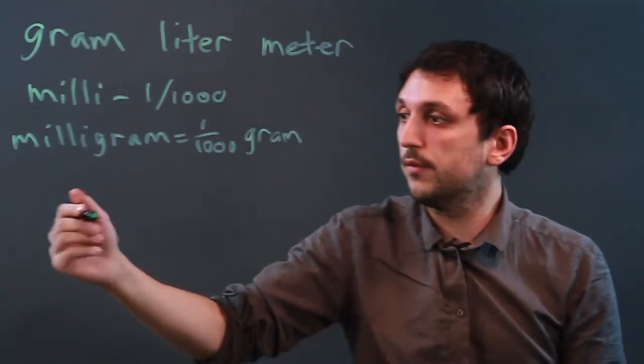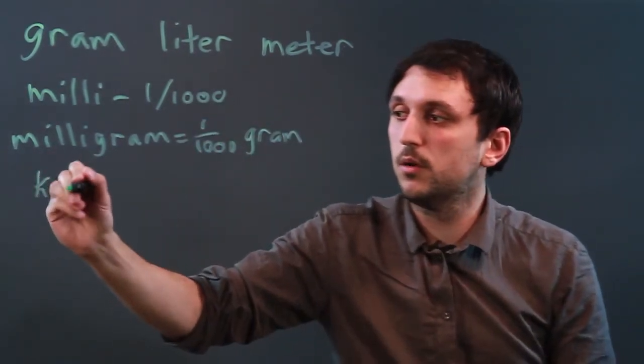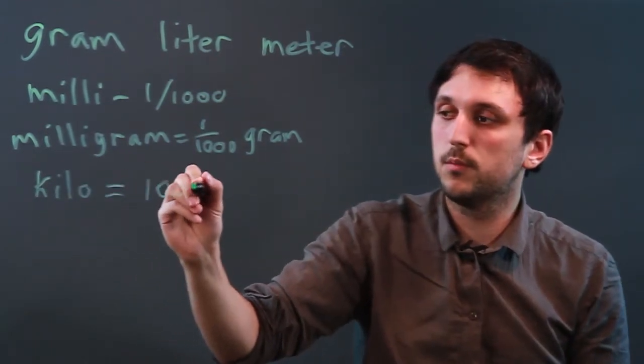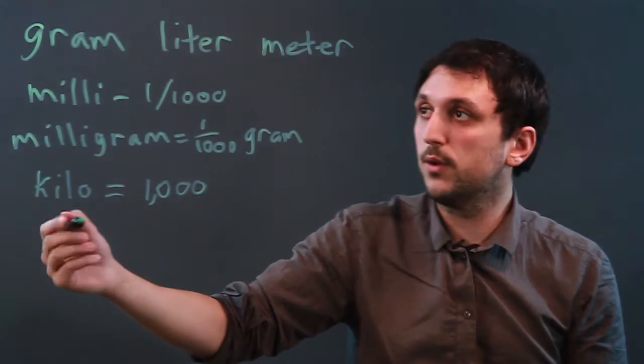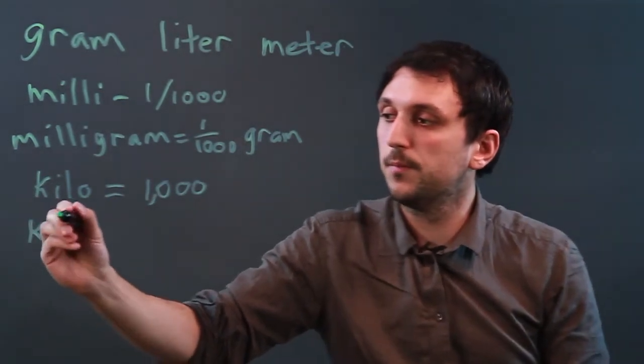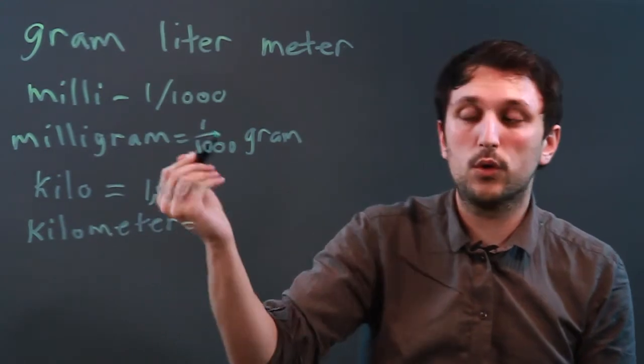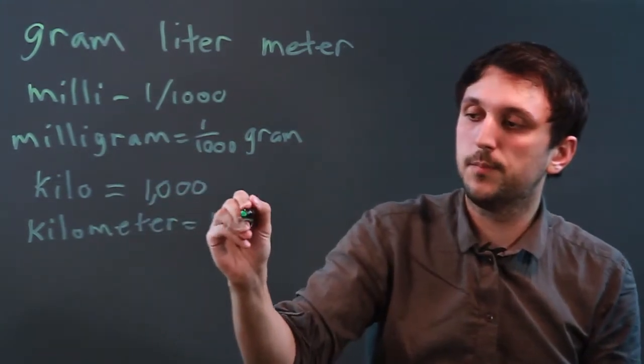Another common prefix is kilo, which is one thousand. So if we say kilometer, it equals one thousand meters.